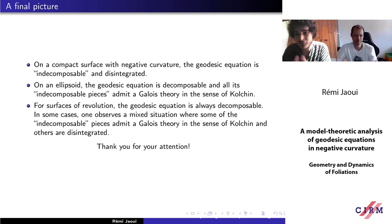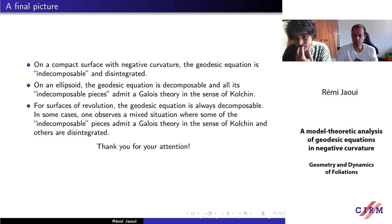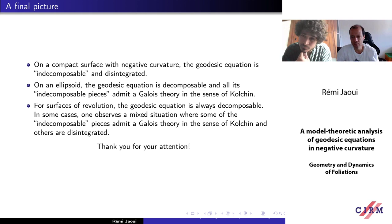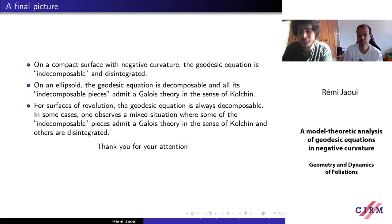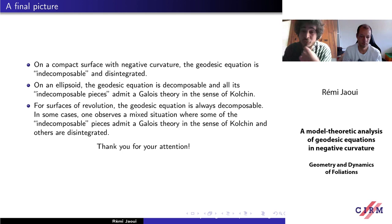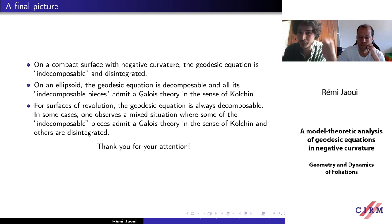Another question: does our knowledge of Jouanolou foliation in degree 2 now allow us to say it's disintegrated? The generic vector field is disintegrated. Since it's structurally stable, if it were not disintegrated, the generic vector field would also not be disintegrated. So for this reason, it should be known that the Jouanolou vector field is disintegrated.